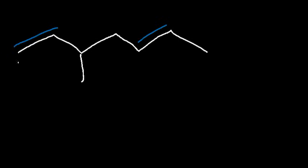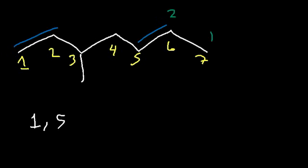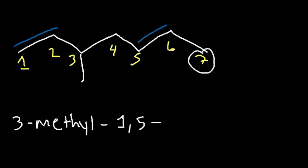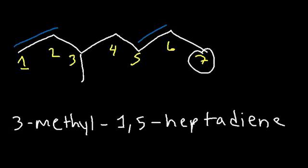Go ahead and try this example. What direction should we number it — from the left or from the right? If we start from the left, the double bond will be at 1; from the right, it's going to be at 2. Counting left to right gives us 1 through 7, meaning double bonds at 1 and 5. Counting the other way gives double bonds at 2 and 6. Since 1 is lower than 2, we count left to right. We have a methyl on carbon 3, double bonds at 1 and 5, and a 7-carbon chain. So this is 3-methyl-1,5-heptadiene.